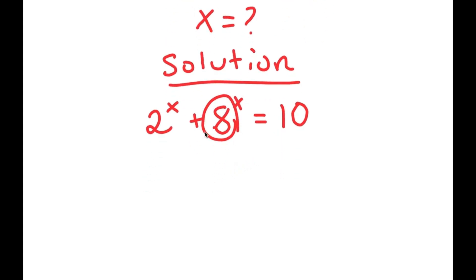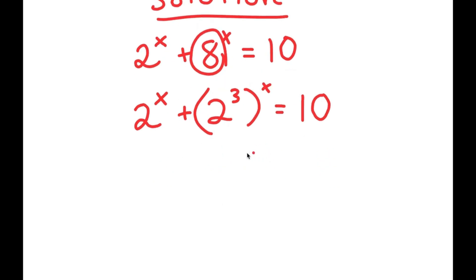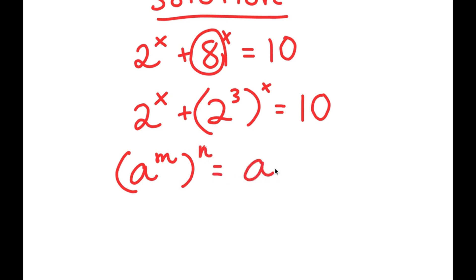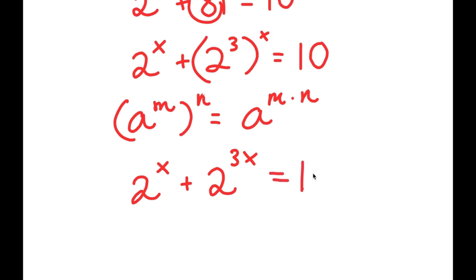Now from here, 8 can be rewritten as 2 to the power of 3. So I get 2 to the power of x plus 2 to the power of 3 to the power of x is equal to 10. Now if I have something in the form a to the power of m to the power of n, this is equal to a to the power of m times n. So 2 to the power of x plus 2 to the power of 3x, which equals 10.